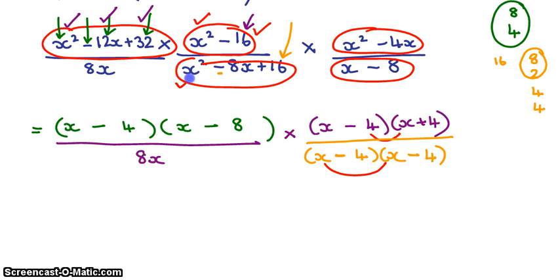Let me check. x squared, yes. Minus 4x minus 4x will give me minus 8x and plus 16. So I'm right. And last one, I'm multiplying by x squared minus 4x.